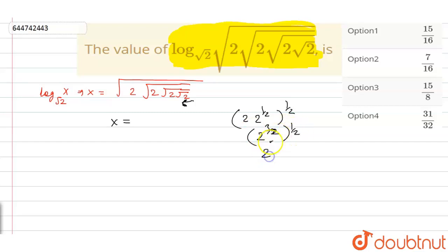That will become 2 to the power 3 by 4 and now we have to multiply this with 2. So 2 to the power 3 by 4 into 2 to the power 1 by 2. Now this will become 2 to the power 3 by 4 plus 1 that will be 7 by 4 to the power 1 by 2.